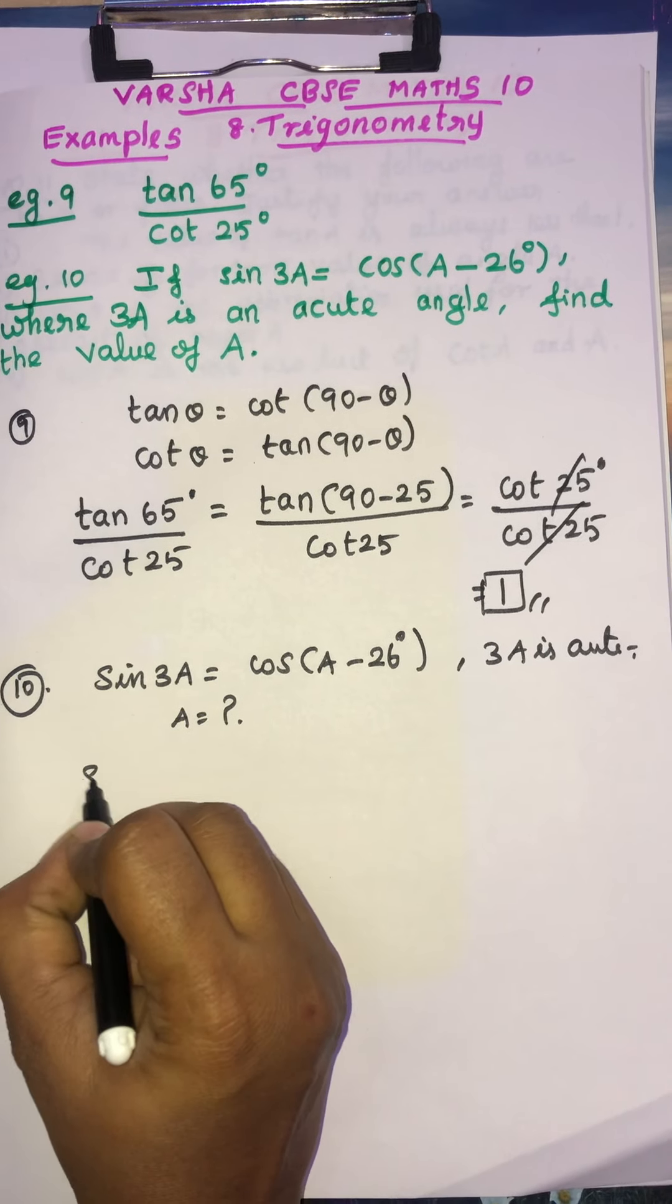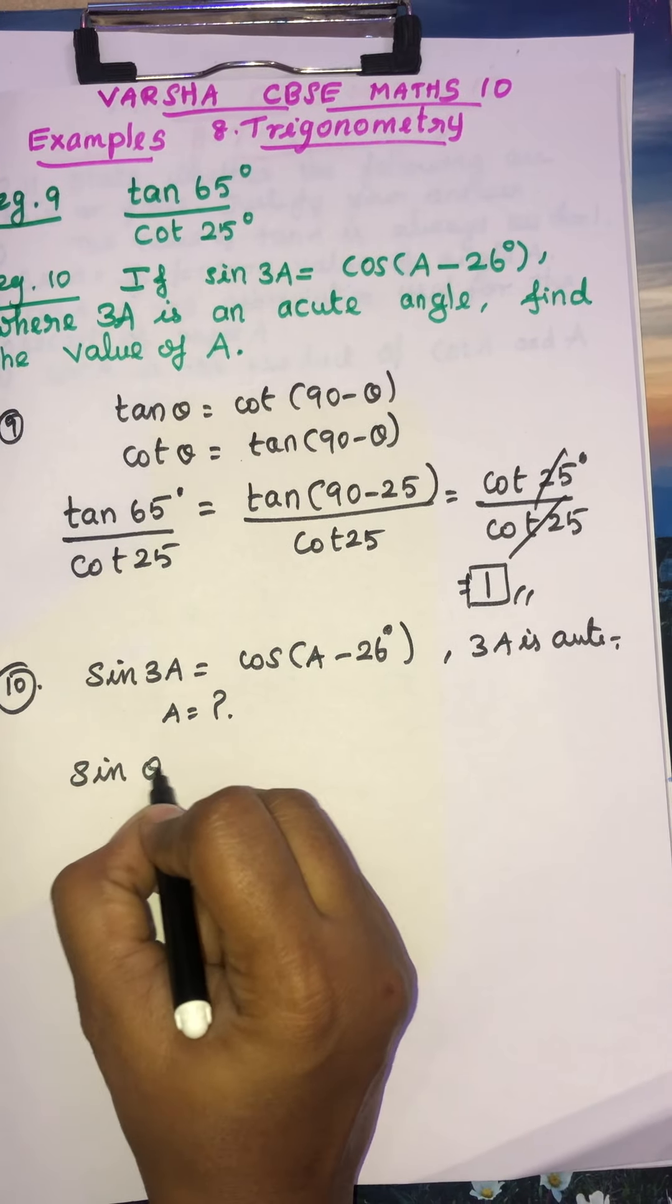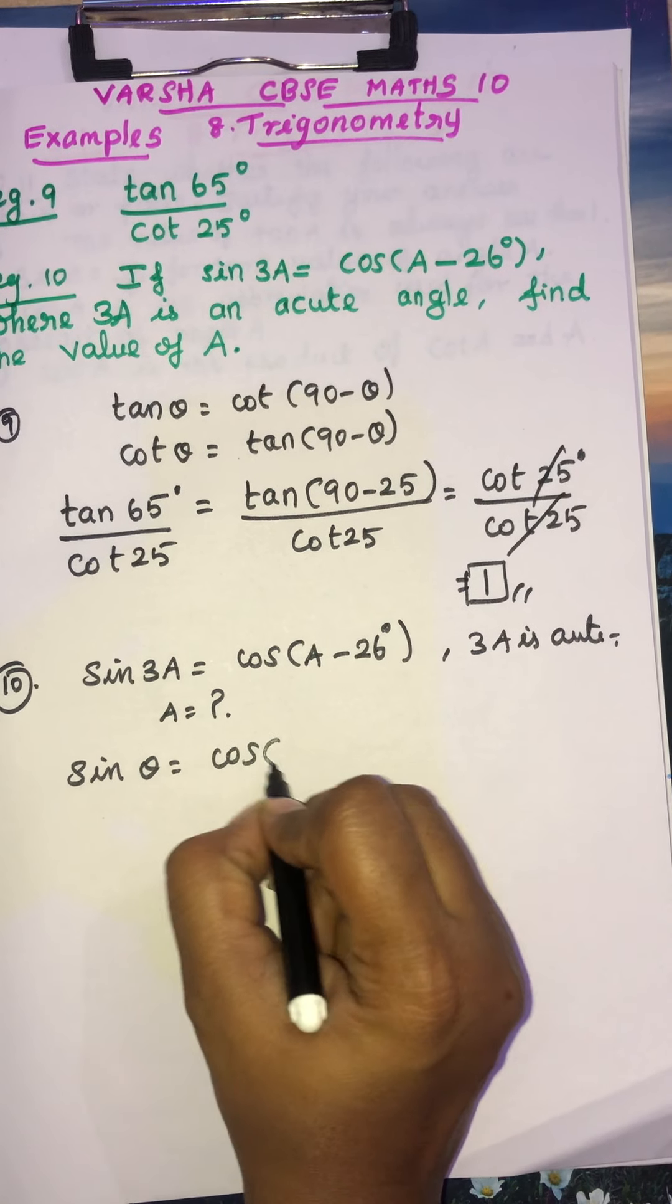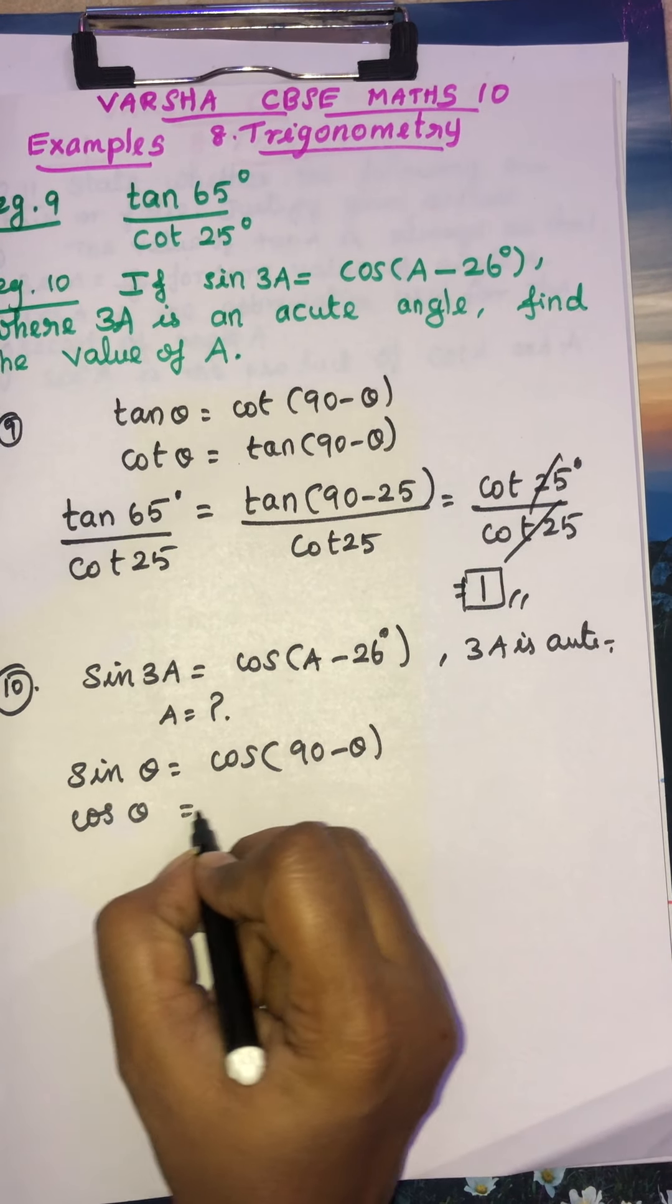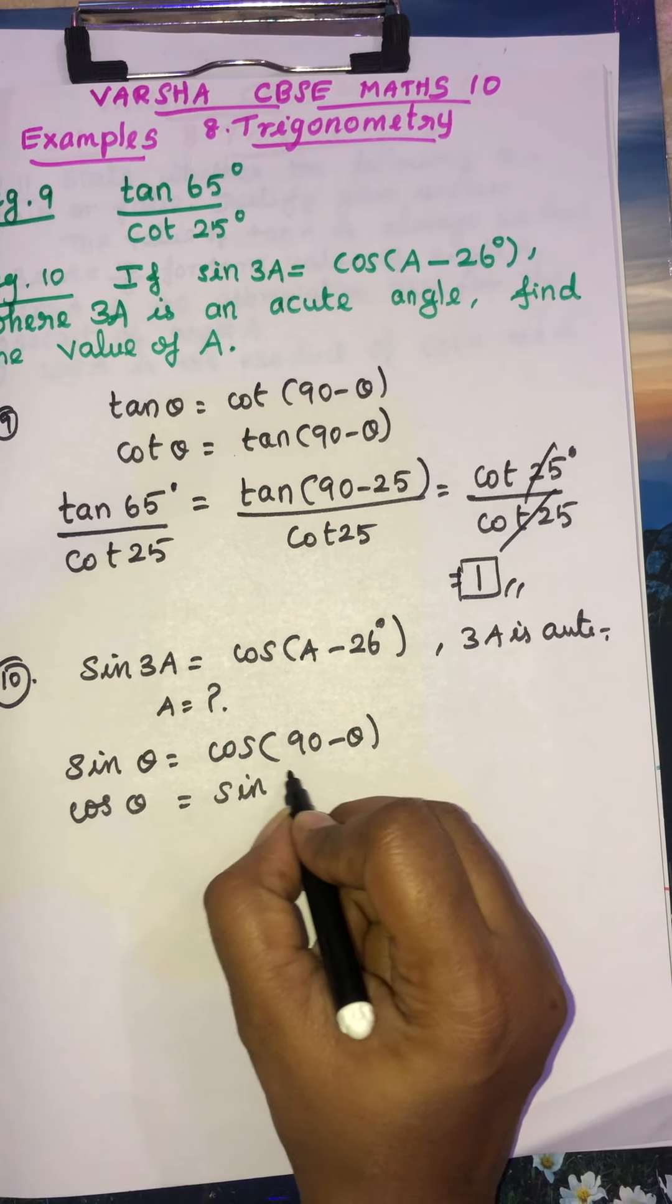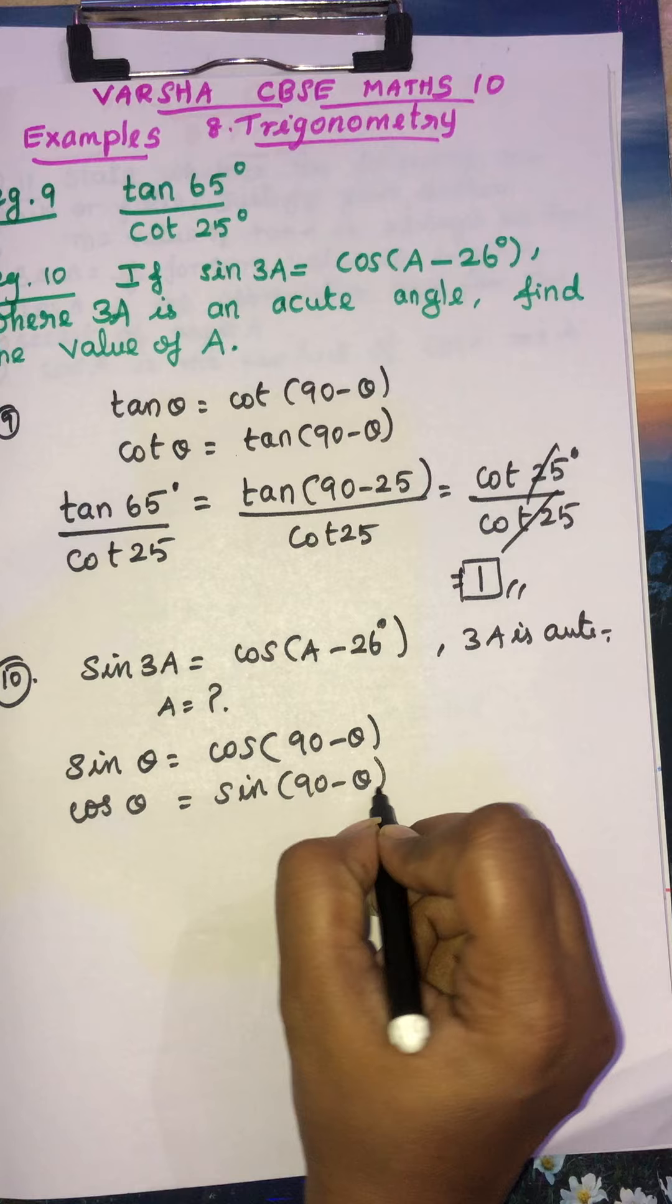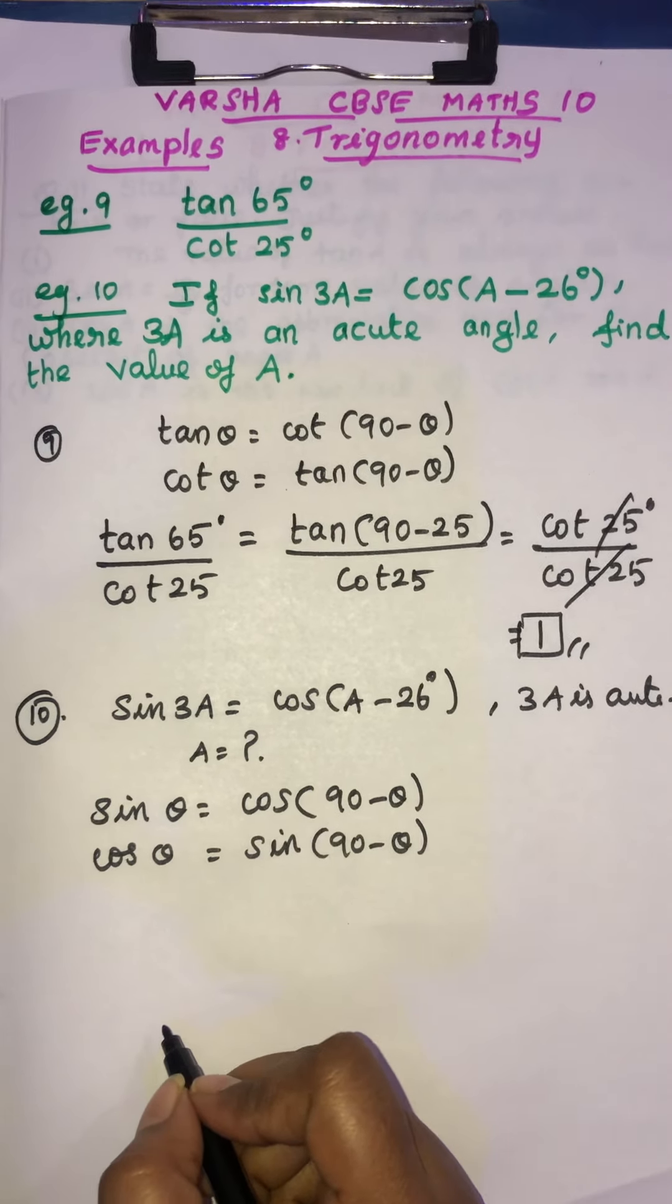So sin theta, what is the formula? Sin theta is equal to cos 90 minus theta. Then cos theta can be written like sin 90 minus theta.